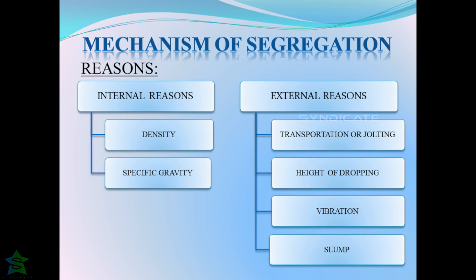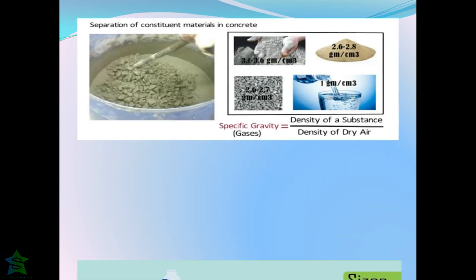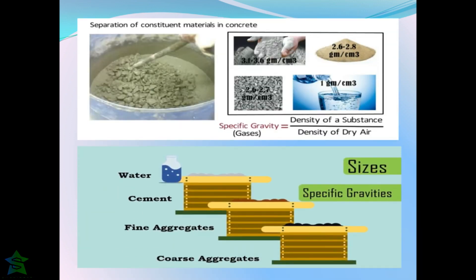Segregation may happen due to two reasons: internal reasons and external reasons. Internal reasons include density and specific gravity, whereas external reasons may be due to transportation, jolting, height of dropping, vibration, etc. Specific gravity is the ratio of density of the substance to that of the density of a standard substance.